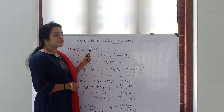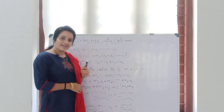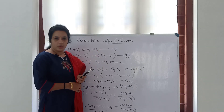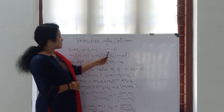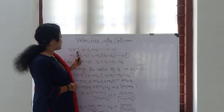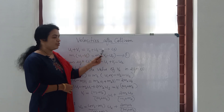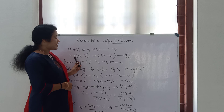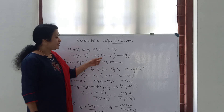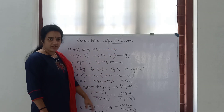Now we are going to derive the expressions for velocities after collision. We have already discussed that after the collision the velocities will be changed. So we are using these two equations that we have already discussed in the last video — Equation 3, and Equation 1: m1 into u1 minus v1 is equal to m2 into v2 minus u2. These two equations we have to use for this derivation.